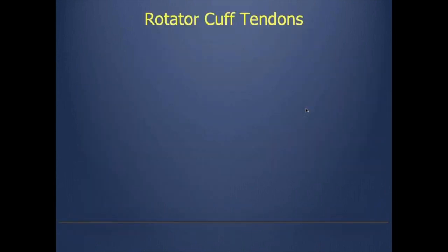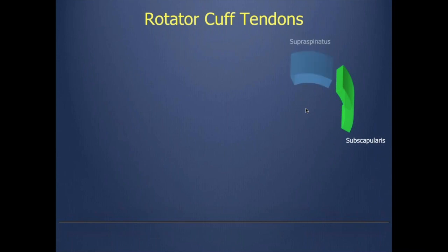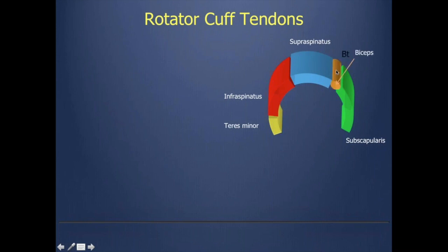Let's move to some of the anatomy of the rotator cuff tendons and important anatomical points. We have four tendons. Anteriorly, we get the subscapularis tendon, and then posteriorly the supraspinatus, infraspinatus, and teres minor. There are three tendons posteriorly and one tendon anteriorly. There is a little interval or gap between subscapularis and supraspinatus — this is what we call the rotator cuff interval, and this is where the long head of biceps is passing.